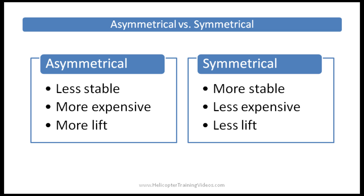Comparing that to symmetrical airfoils — like the R-22 main rotor and most other light training helicopters — these tend to be more stable because the center of pressure doesn't move very much. That reduces blade twisting and control loads. They're usually easier and cheaper to make, with less requirement for stronger materials and simpler construction. But the downside is that they generally produce less lift compared to an asymmetrical airfoil.